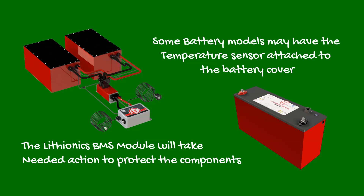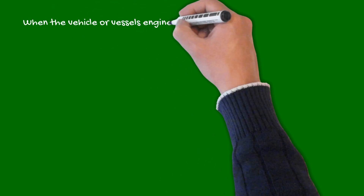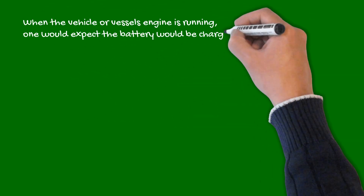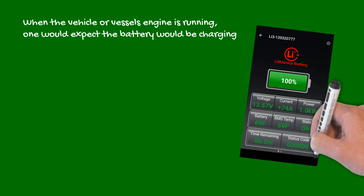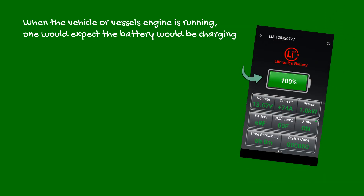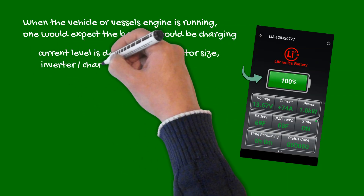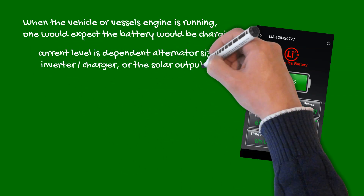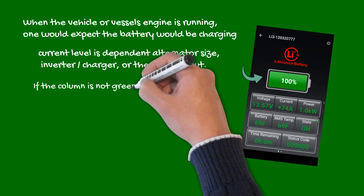When the vehicle or vessel's engine is running, one would expect the battery would be charging. However, to be 100% sure, look at your current value. The column must be green in color and show significant positive amperage. This current level is dependent on the alternator size, inverter charger output when on the grid, or the solar panel's output.